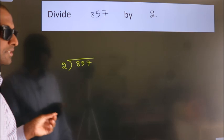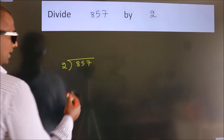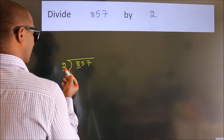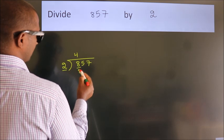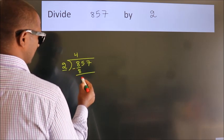This is your step 1. Next, here we have 8, here 2. When do we get 8? In 2 table, 2 fours 8. Now we should subtract, we get 0.